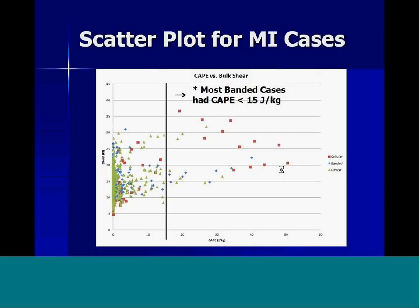Justin looked at more recent cases in northern Michigan using a similar scatter plot methodology with CAPE on the x-axis and shear on the y-axis. The most important driver for organization in his area was stability — CAPE — where most well-defined bands occurred when land CAPE was less than about 15 joules. The more unstable over the land, the greater the chance of getting cellular snow showers or diffuse-looking bands.